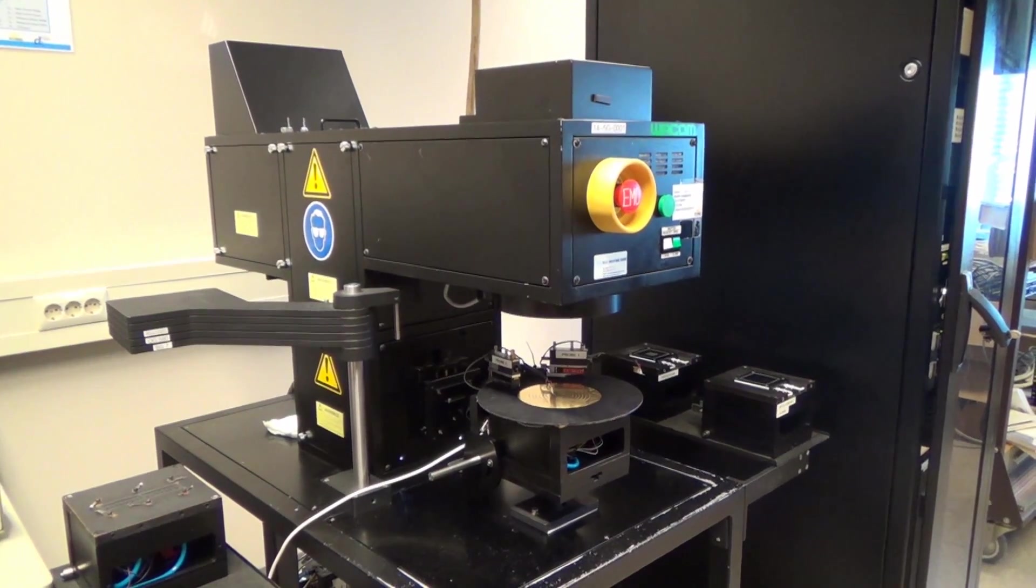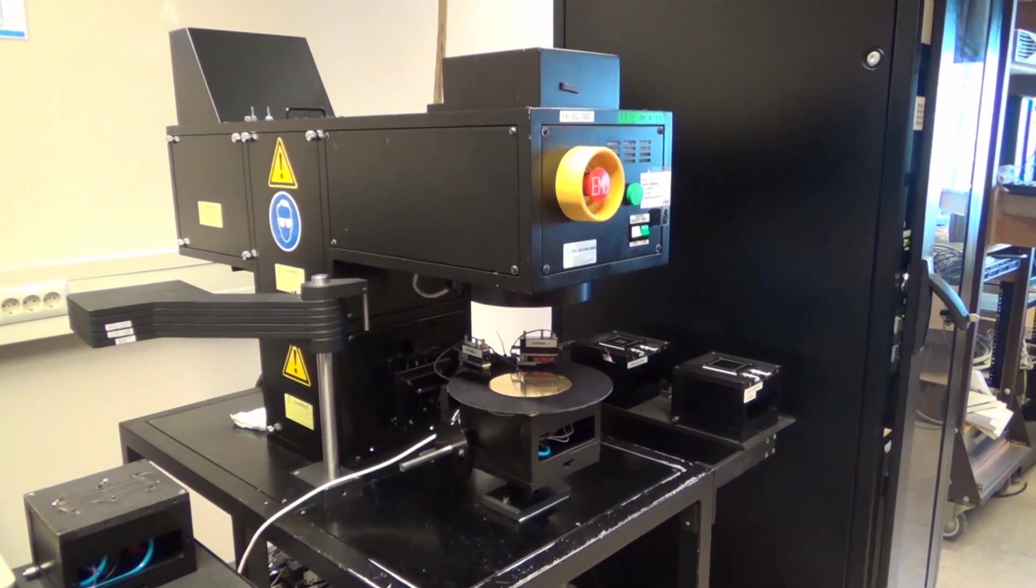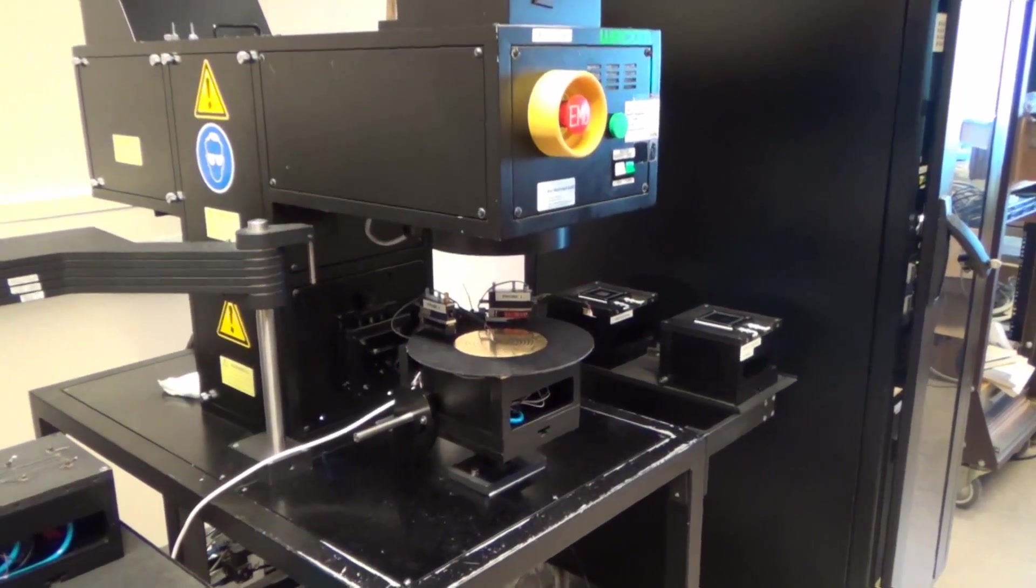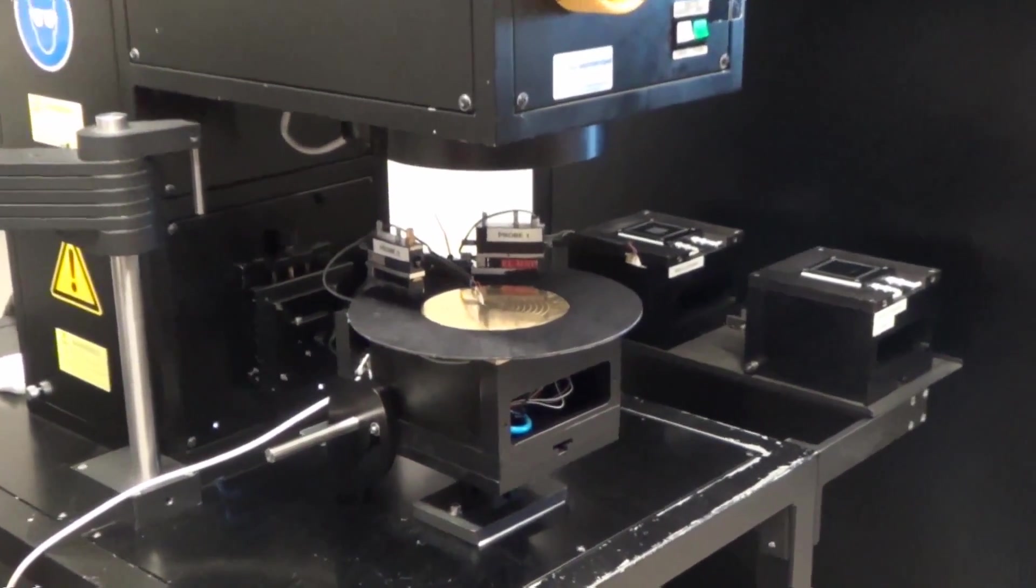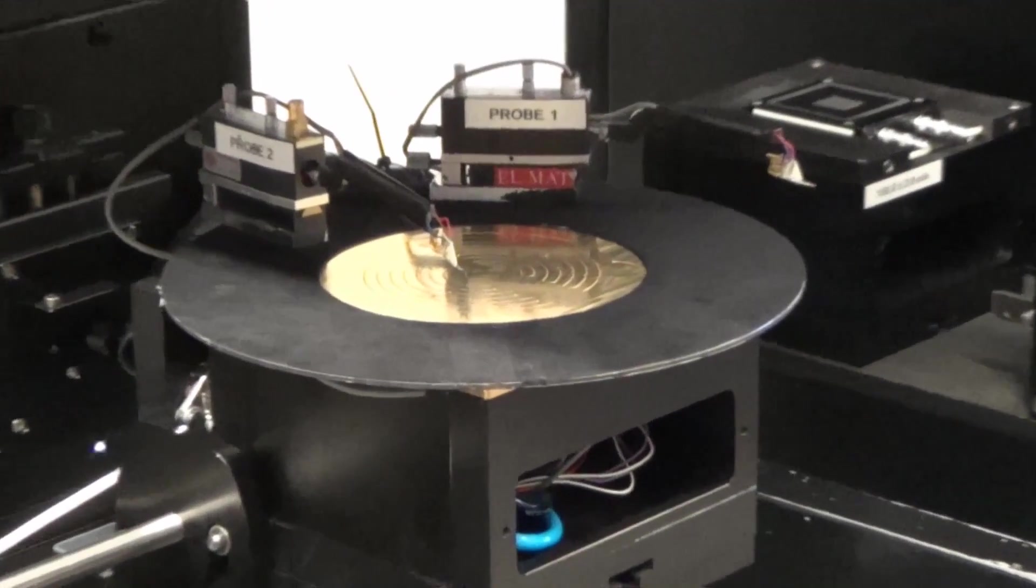We will now demonstrate how a typical illuminated JV measurement is performed on a lab-scale solar simulator system. Here we see a lab-scale dual-beam solar simulator with a xenon and halogen lamp for measuring accurate illuminated JV curves using the four-point probe method.